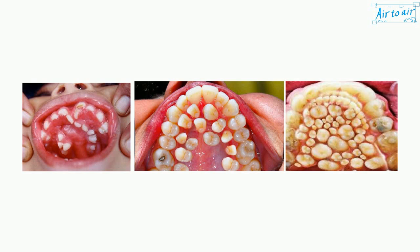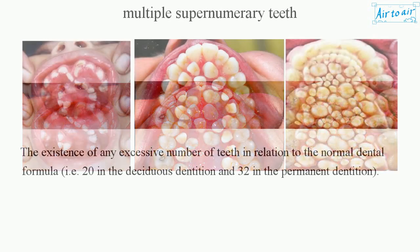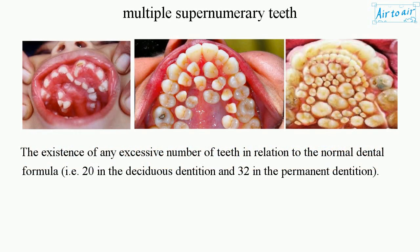Multiple supernumerary teeth refers to the existence of any excessive number of teeth in relation to the normal dental formula, i.e., 20 in the deciduous dentition and 32 in the permanent dentition.